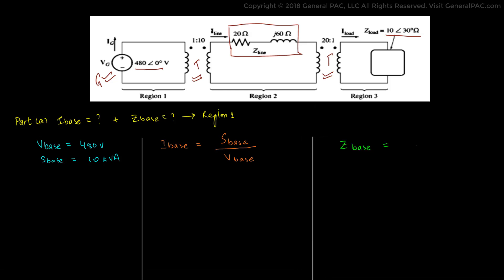Base current is equal to base power divided by base voltage. And base impedance is equal to base voltage squared divided by base power. By putting the values of voltage base and power base in these equations, we can easily calculate current base and impedance base.